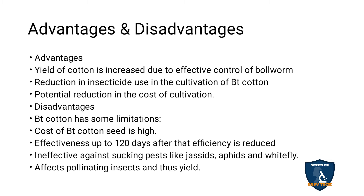BT cotton affects pollinating insects and thus reduces yield. Some beneficial insects are also attacked. Without insect pollination there is no fertilization and no fruits are produced, so this is a big drawback in BT crops.